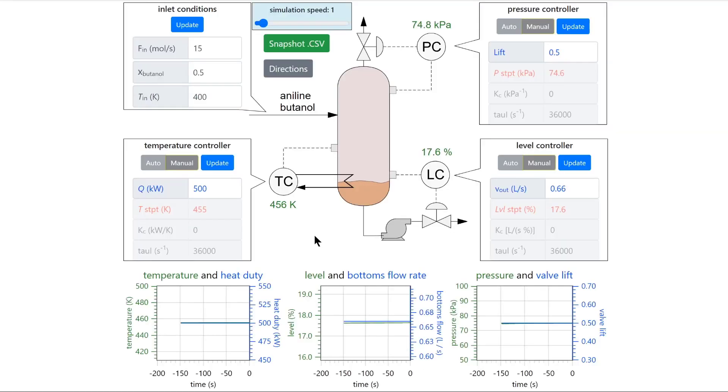To characterize each controller you will need to perform a step change to the manipulated variable. In this video we will do a 10% step change to the heat duty then record and analyze the response of the process variable which is temperature.